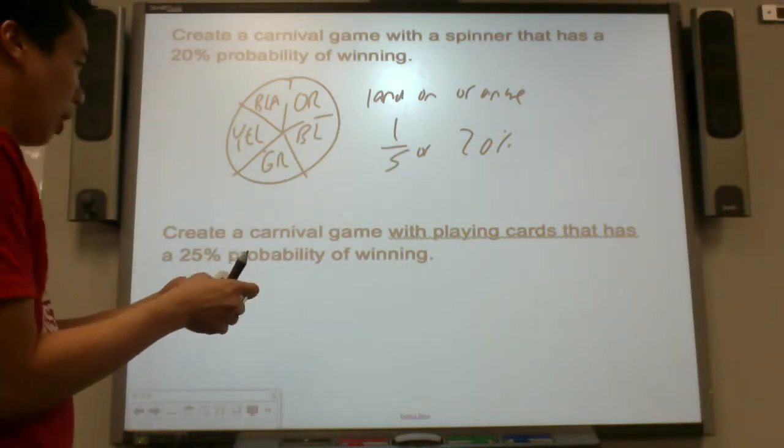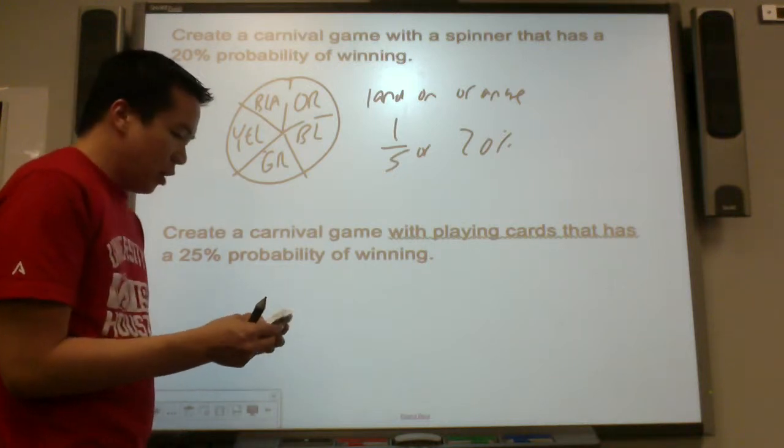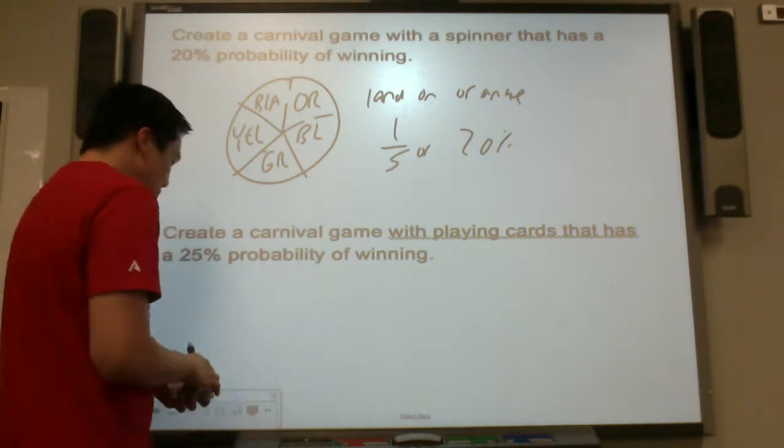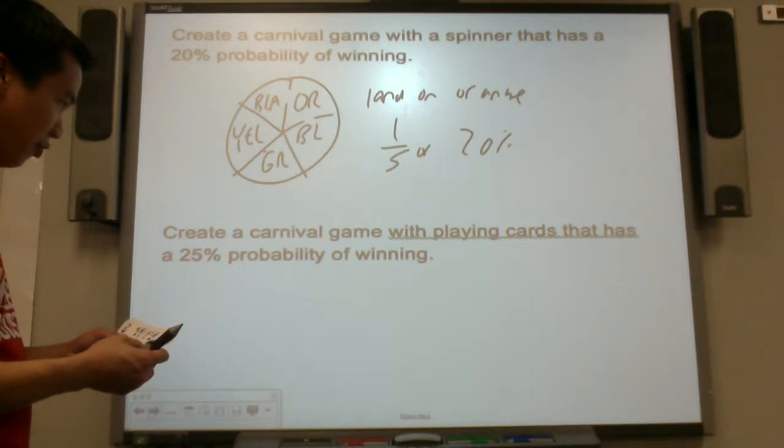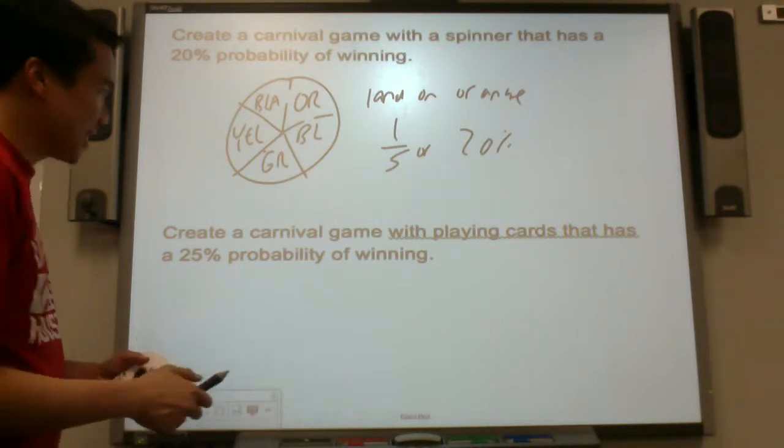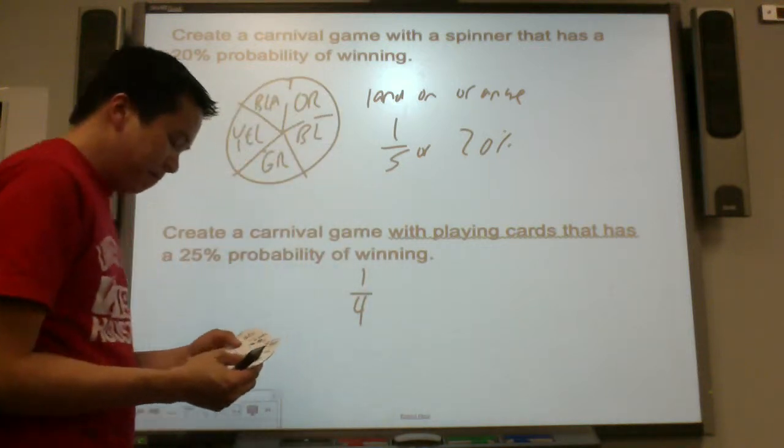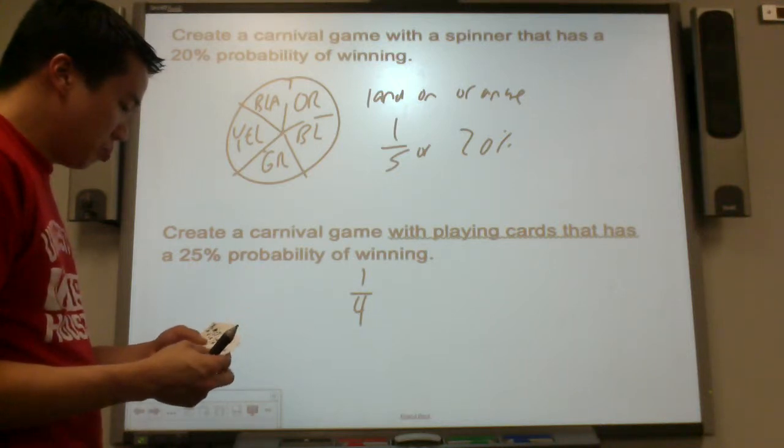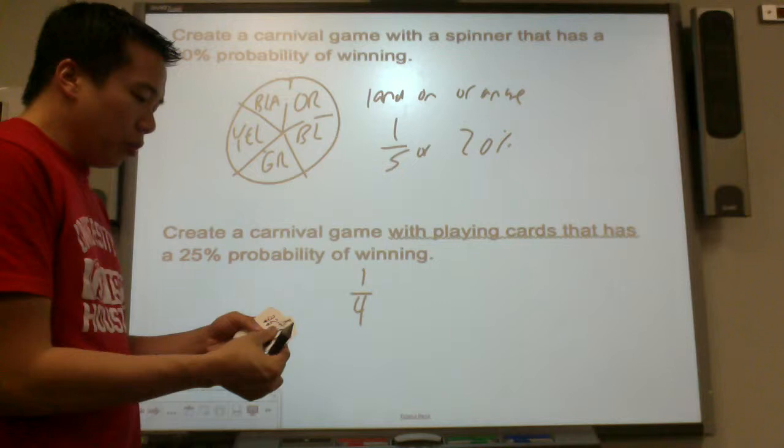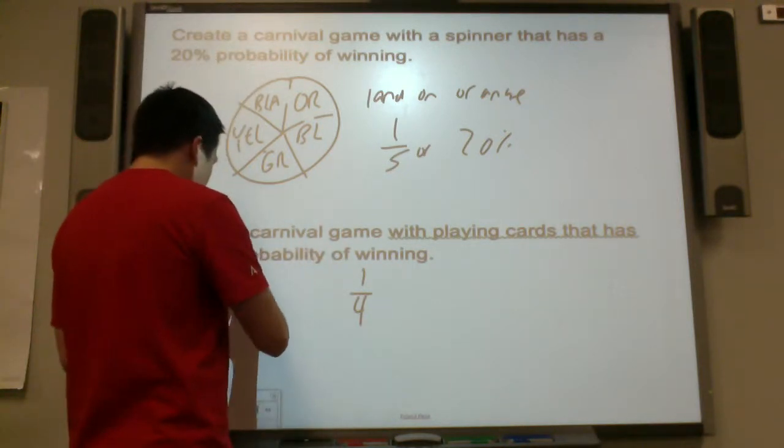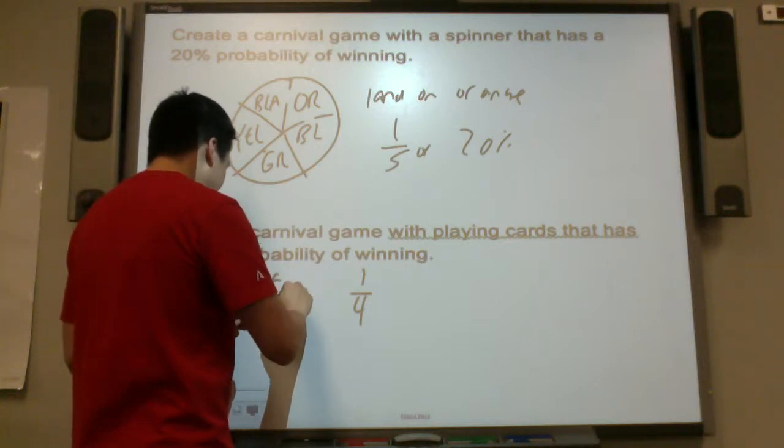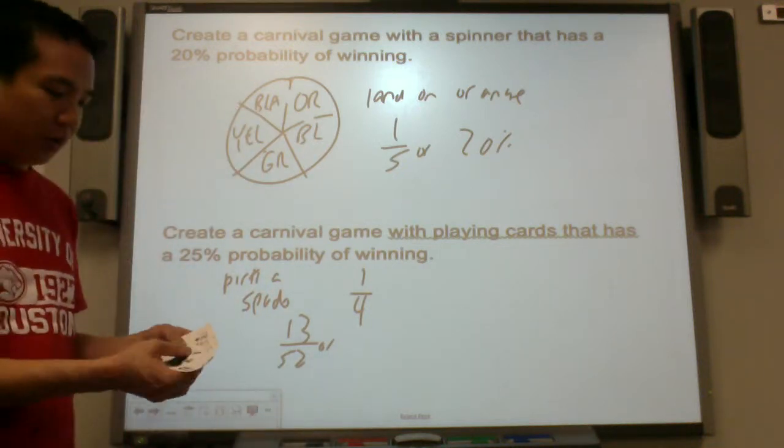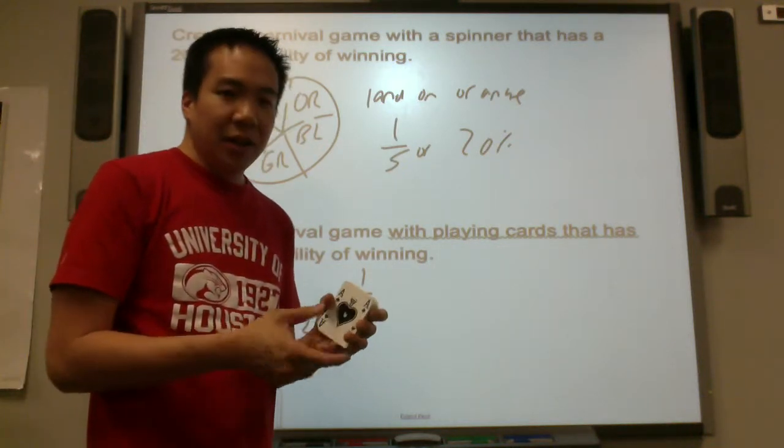And the last one, if you have a deck of playing cards with a 25% probability of winning. What we know is probability of winning is one-fourth. 25% is the same thing as saying one-fourth. One, two, three, four. Oh, aren't there four suits in here? So what if you pick a spade? There are 13 spades out of 52, which simplifies to one-fourth. So that is our carnival game.